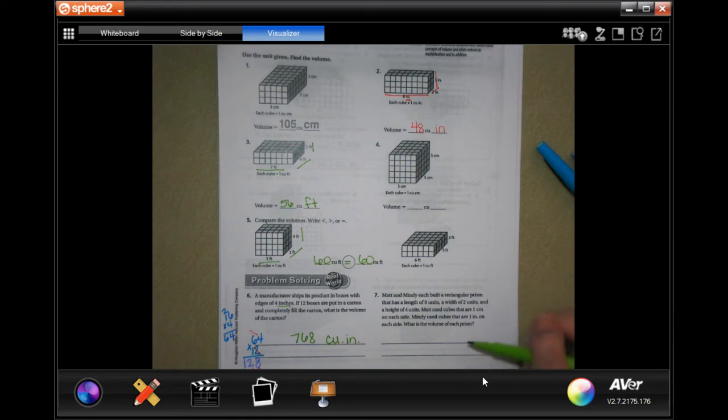Well, it's going to have the same number, it's just that the labels are going to be different. So 5 times 2 is 10, times 4 is 40.